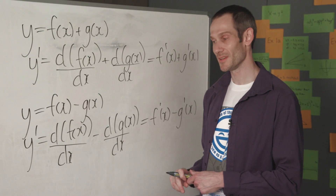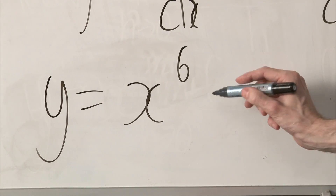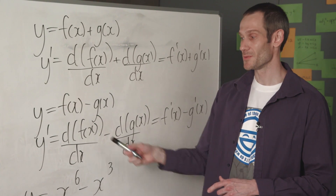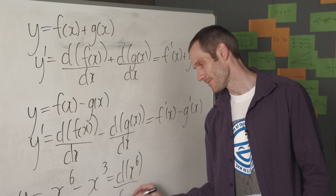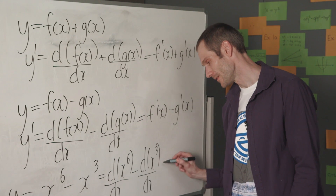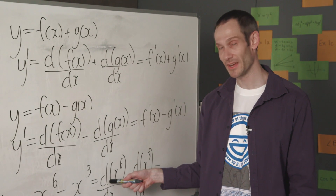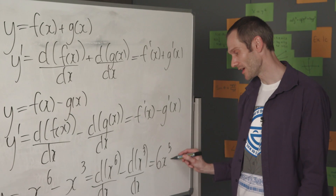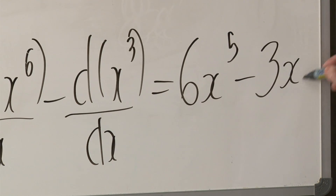For example, let's say I wanted to differentiate the function y equals x to the 6 subtract x cubed. Here I've got the difference of two functions. So by our difference rule, I differentiate that first function, then subtract away the derivative of my second function. For both terms, I have power functions, so using the power rule I bring each indice down to the front and reduce one from the power for each. Then I subtract away the derivative of x cubed — again using the power rule, bringing the indice down to the front and reducing one from the power.